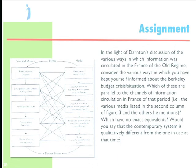So that was the assignment for this time. In the light of Darnton's discussion of the various ways in which information was circulated in the old regime, how have you kept yourself informed about the Berkeley crisis? I first gave this assignment last year because everybody was in a tizzy about it. From looking at the responses, you've evidently resigned yourself to being in debt until you're 70 years old and aren't as concerned about it. But you have learned about it in a number of different ways. The question was: how much is the way in which you've informed yourself about this situation like the way in which people found out about things in the France of the Ancien Régime — and how is it different?